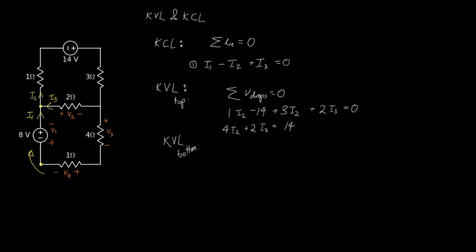So KVL around the bottom says that V1 plus V2 plus V3 plus V4 sums to zero. V1 is minus eight volts.